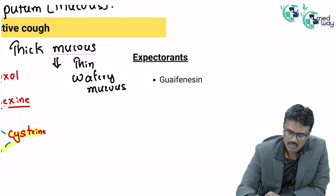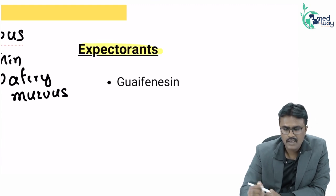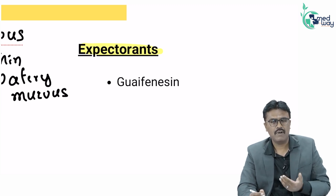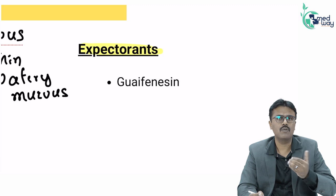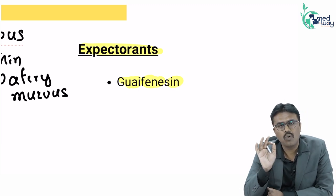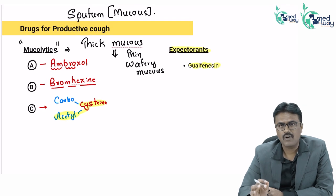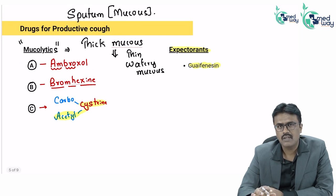There is one more concept called expectorants. An expectorant is a drug which increases the cough and throws the sputum out. The commonly used expectorant drug is guaifenesin. These are the drugs used for productive cough where sputum is found.